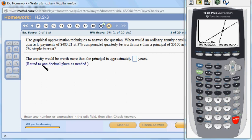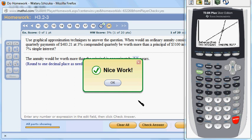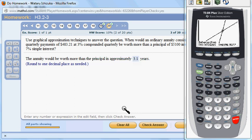All right, so round to one decimal place is needed, so it's approximately some years, so it's going to be 3.1 is approximately 3.1. Then check the answer. All right, that's it. I hope that this was clear.